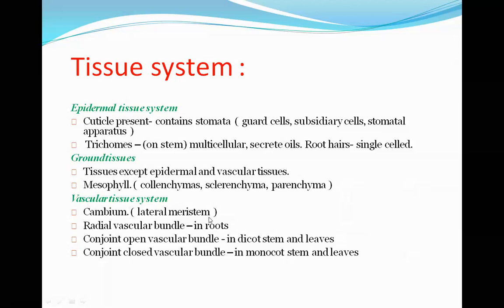The third type is the vascular tissue system. In this system, the two main tissues are xylem and phloem. A characteristic feature of the vascular tissue system is the cambium, which is the lateral meristem. The cambium is present between the xylem and phloem, separating them. Xylem conducts water and phloem transports food materials. The role of cambium in plants will be explored further in upcoming topics.